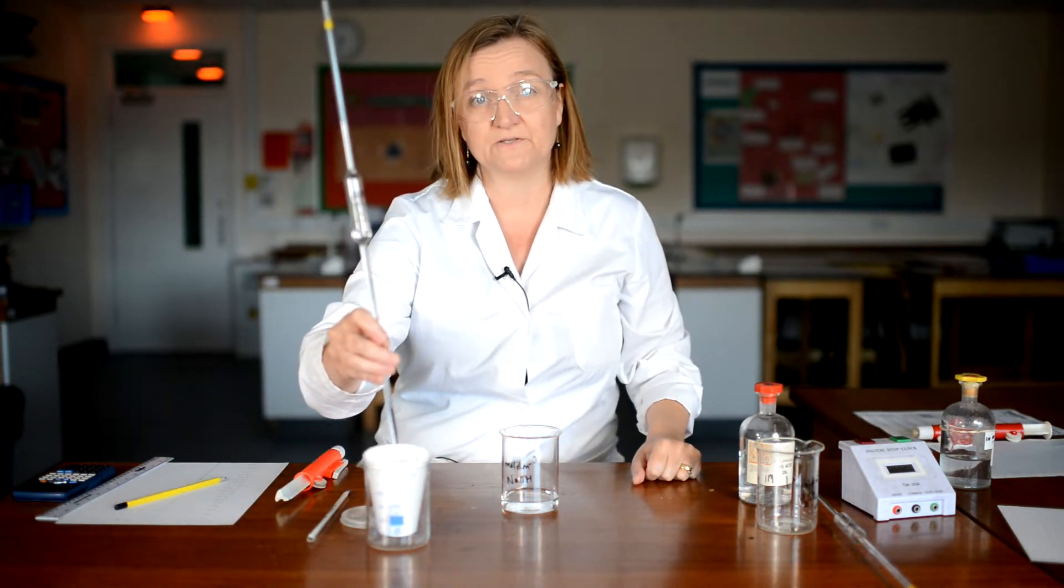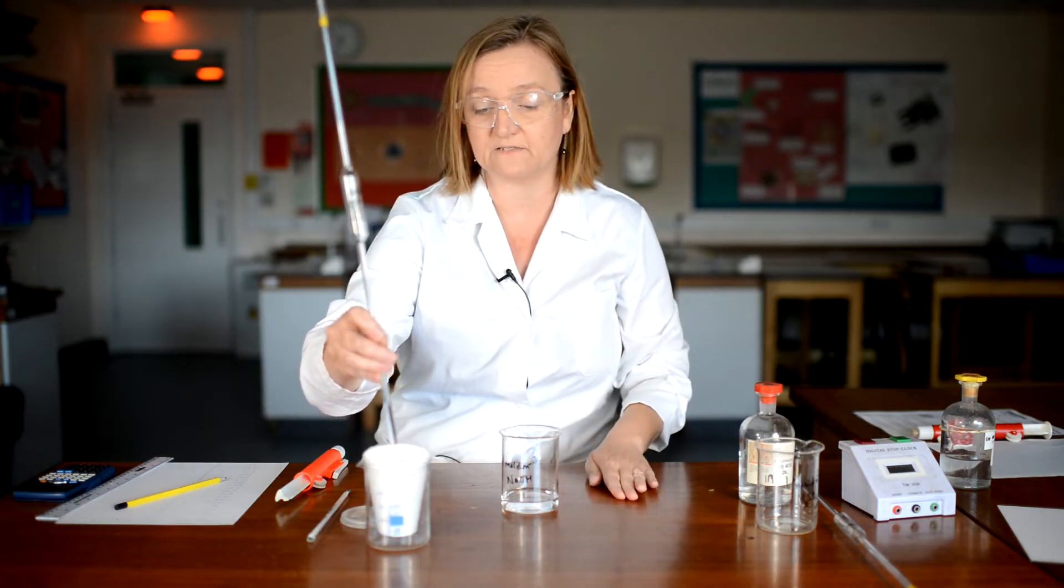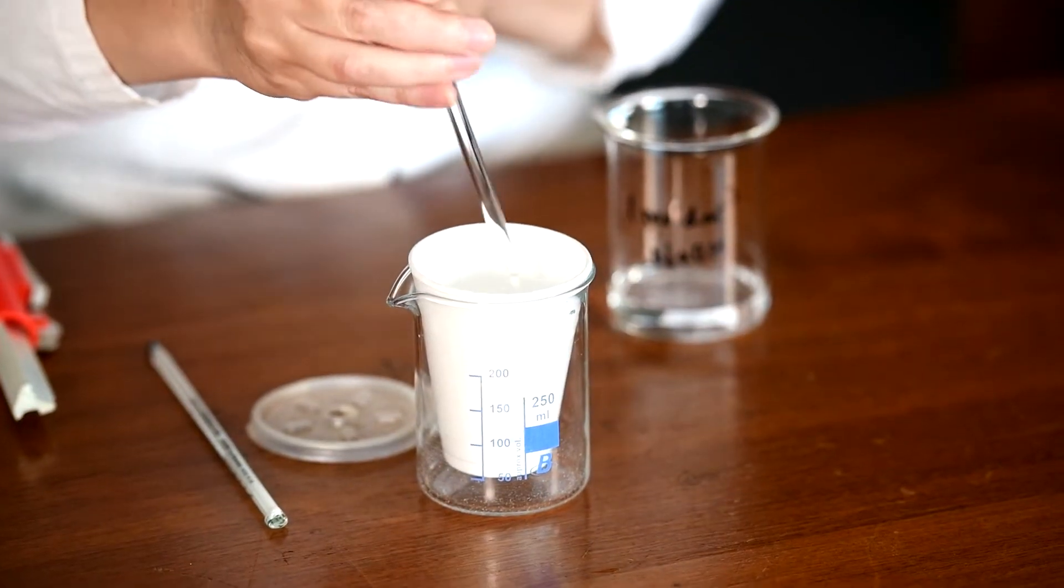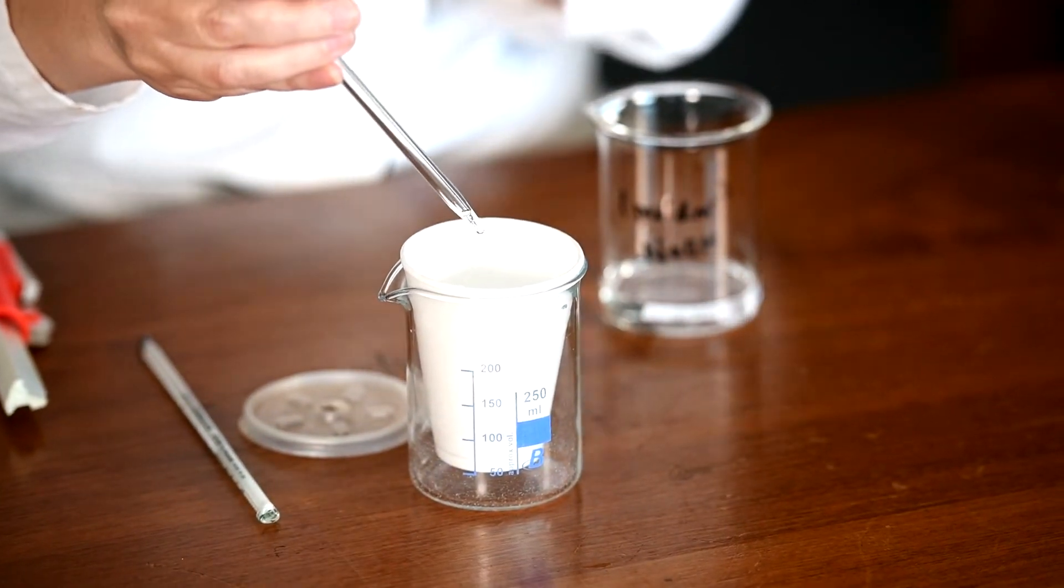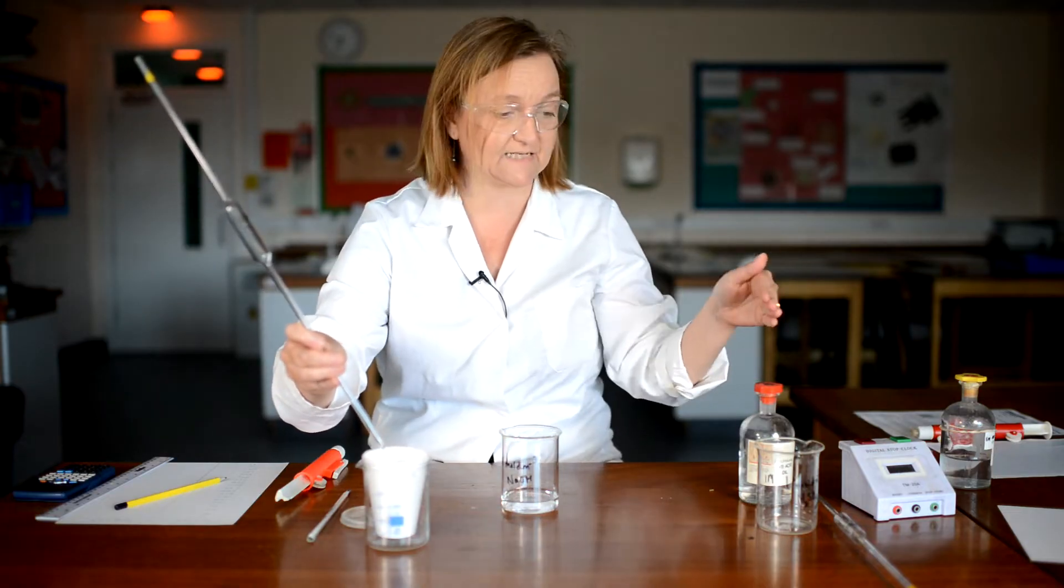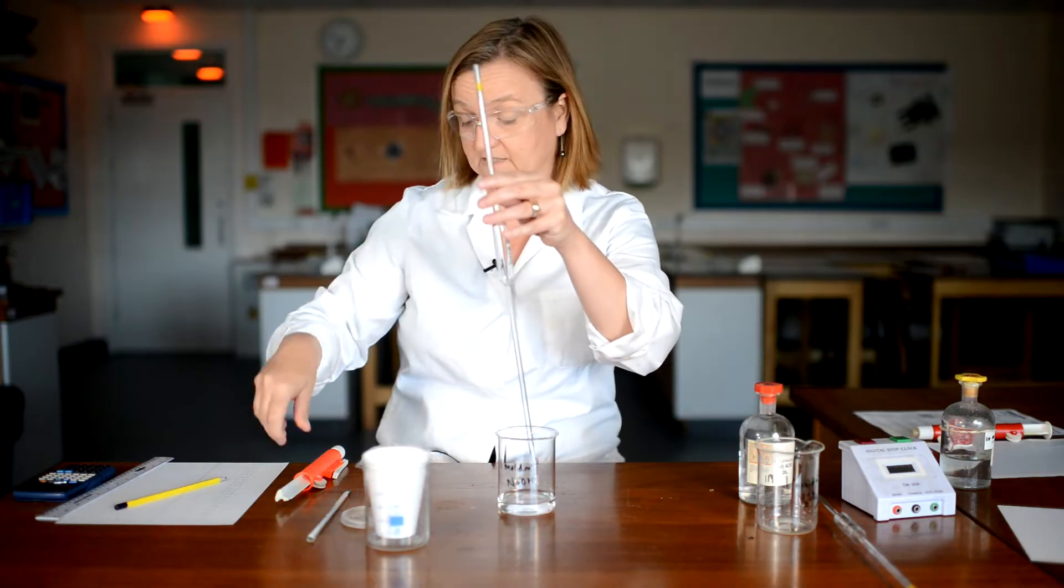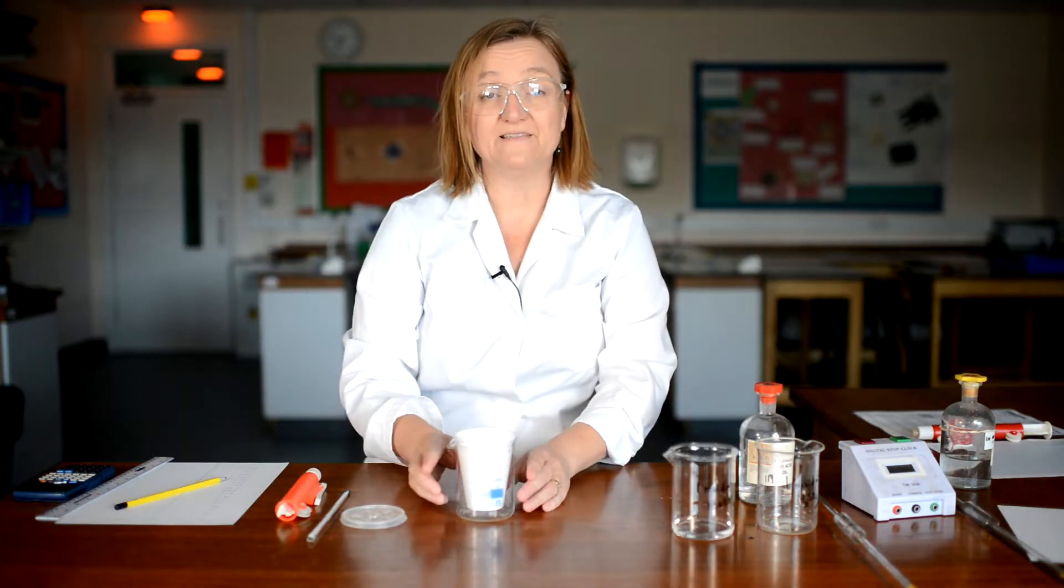Now of course when you use a pipette like this you don't want to blow the last piece of sodium hydroxide out because when the piece of glassware was made that little bit in there has been accounted for. So I've added exactly 20 centimetres cubed but remembering the stoichiometry, I need to have twice as much sodium hydroxide so I'll do that again. So I've now got 40 centimetres cubed of my one molar sodium hydroxide in my polystyrene cup.